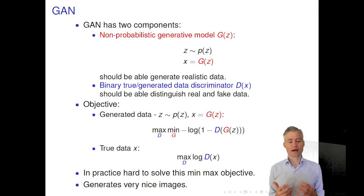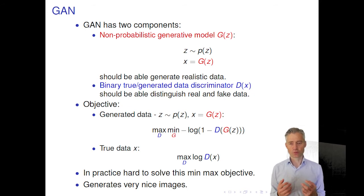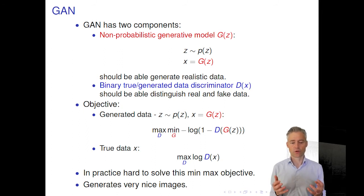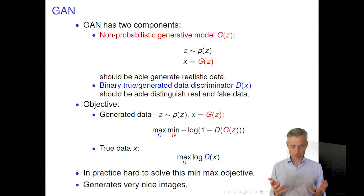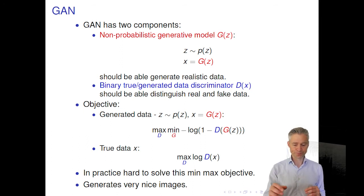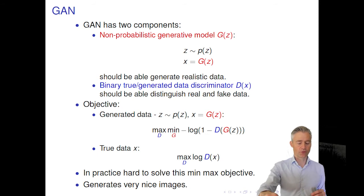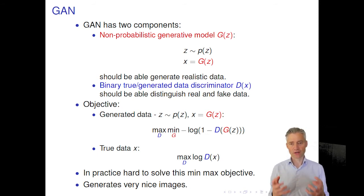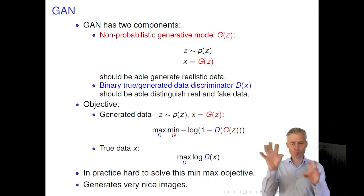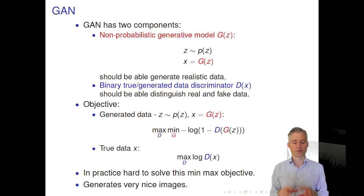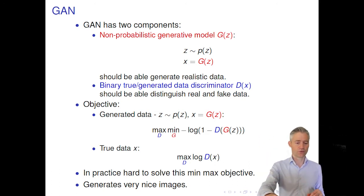In practice, it's quite hard to solve this min-max objective compared to standard neural network training where we just minimize cross-entropy. The good thing — and this may be why GANs are so popular — is that they generate very nice synthesized data, which is of course very appealing. Whether they truly capture the underlying distribution or find a relatively few points synthesized well in the high-dimensional manifold of real images is not entirely clear and hard to quantify.